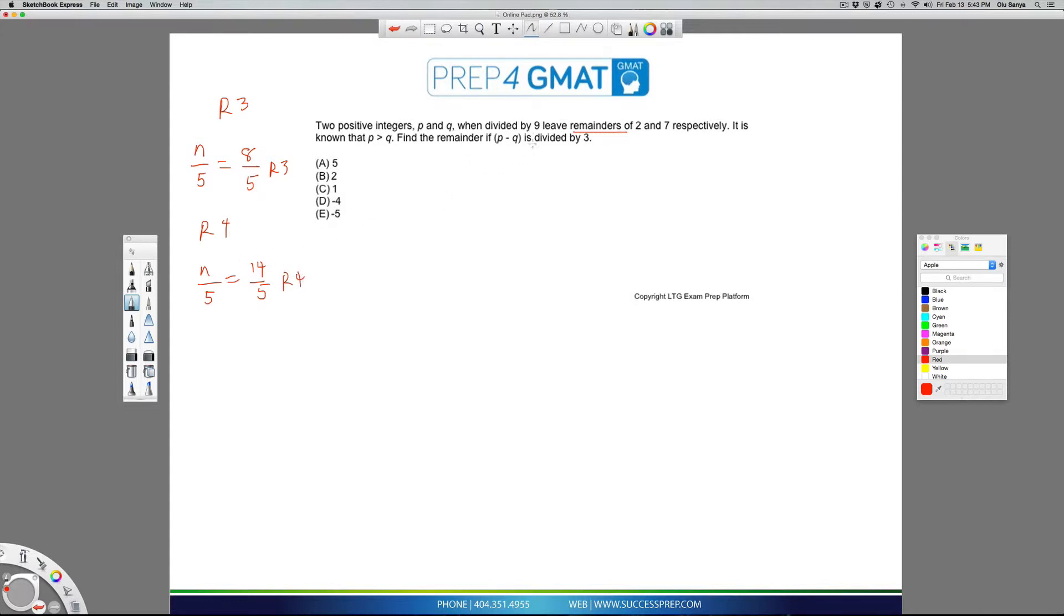If we bring that same idea here, we have two numbers, P and Q, and when divided by nine, we get remainders of two and seven respectively. But they're telling us that P is greater than Q. That is very important. But as you notice here, the remainder of P is actually smaller than that of Q.